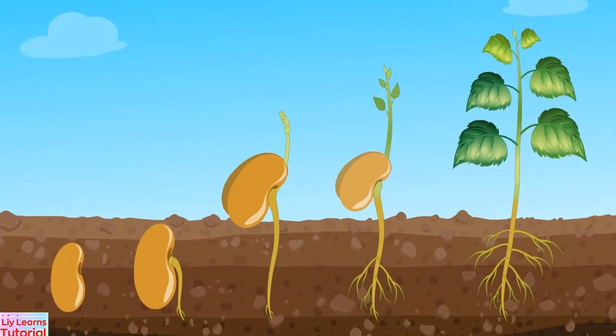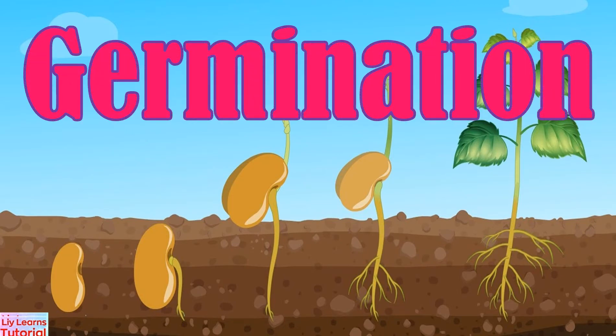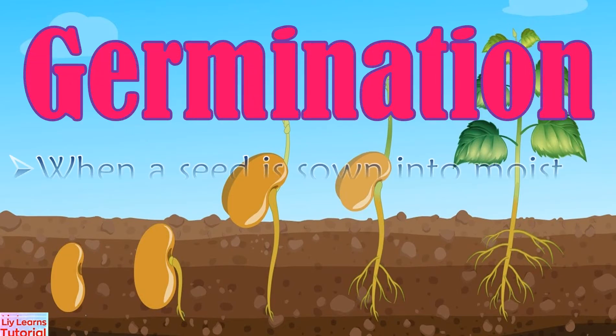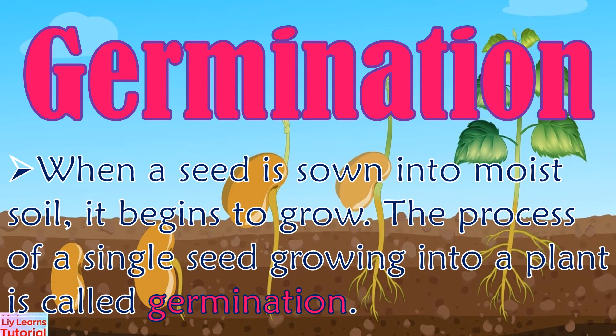What is germination? When a seed is sown into moist soil, it begins to grow. The process of a single seed growing into a plant is called germination.